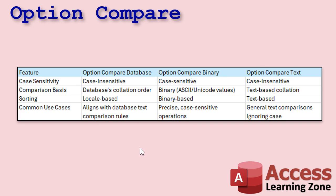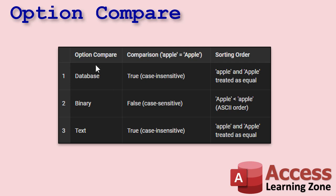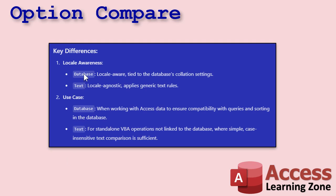Option Compare Text is generic text comparisons. So: Database is case-insensitive, Binary is case-sensitive. Apple and Apple are the same under Database; Apple is not the same as apple under Binary. Capital A is ASCII 65, and lowercase a is ASCII 97. The capital A is going to be sorted lower than the lowercase A under Binary because of those ASCII values.